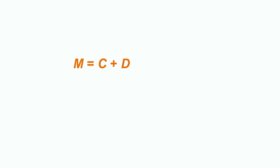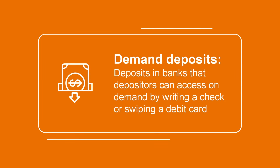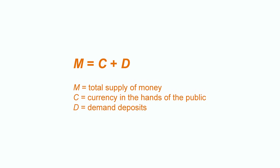Let's start with a simple definition of money supply. Economists define money supply as M equals C plus D, where M is the total supply of money, C is currency in the hands of the public, and D is demand deposits. These are deposits in banks that depositors can access on demand simply by writing a check or swiping a debit card, such as those held in checking accounts. Economists define money broadly as anything that can be used as payment for goods and services or in repayment of debt. So M equals C plus D includes both currency as well as demand deposits because both fit that broad definition of money.